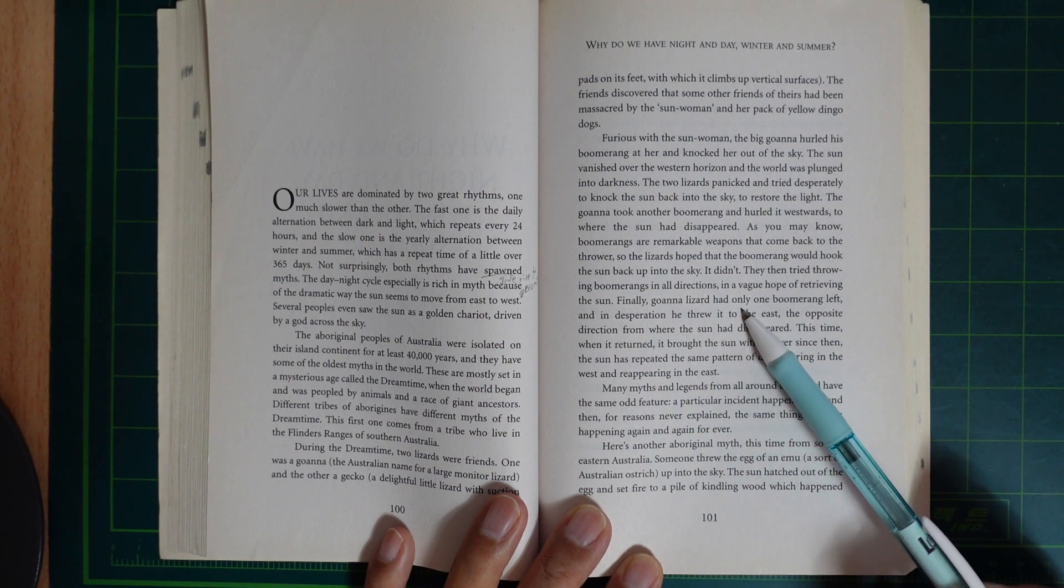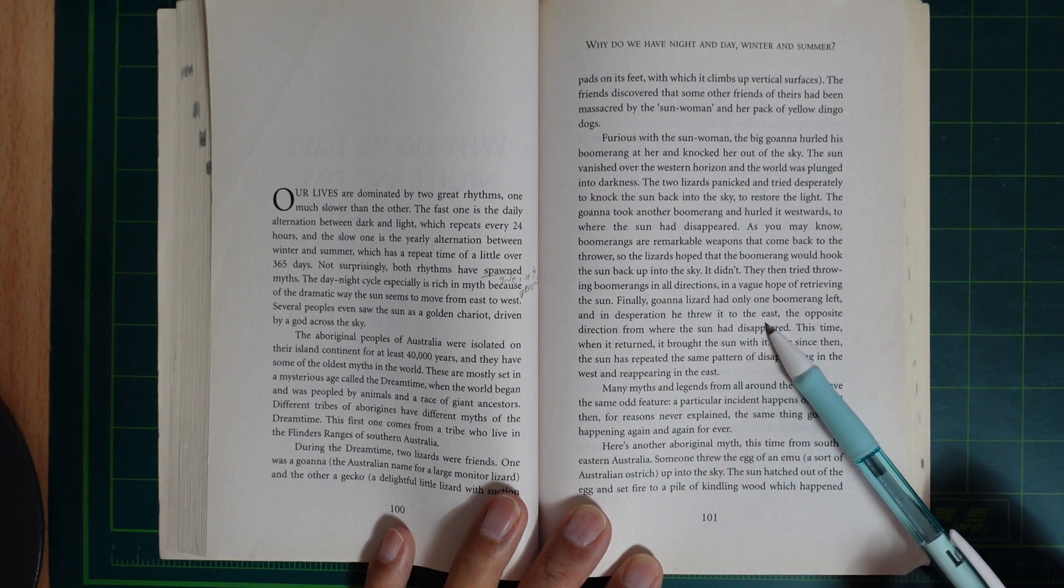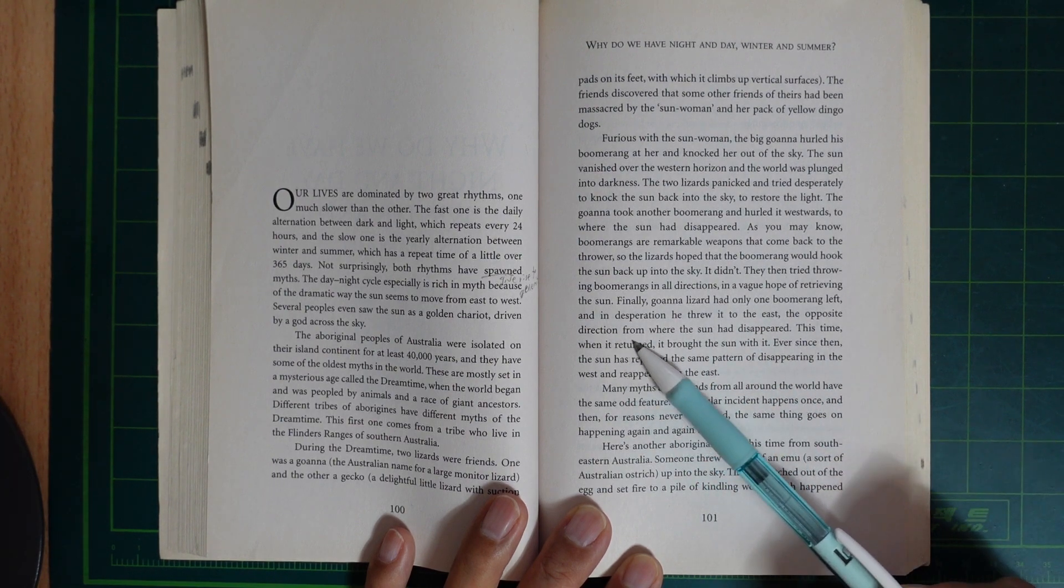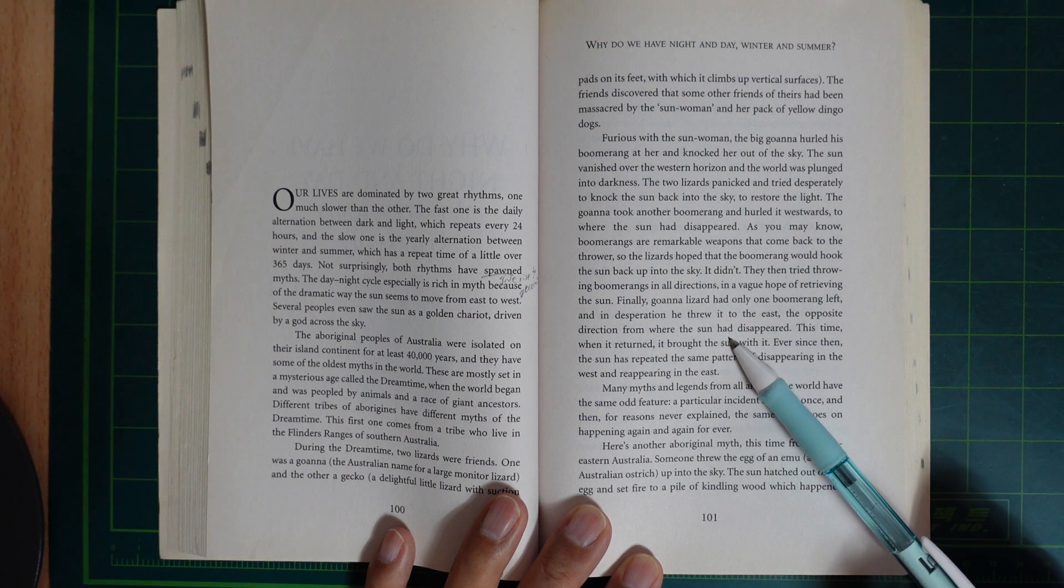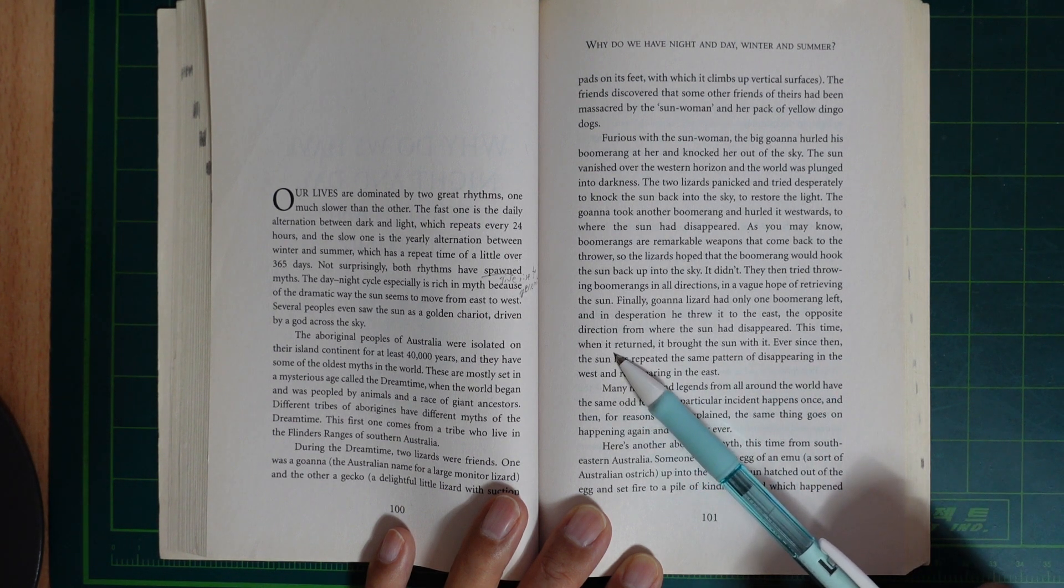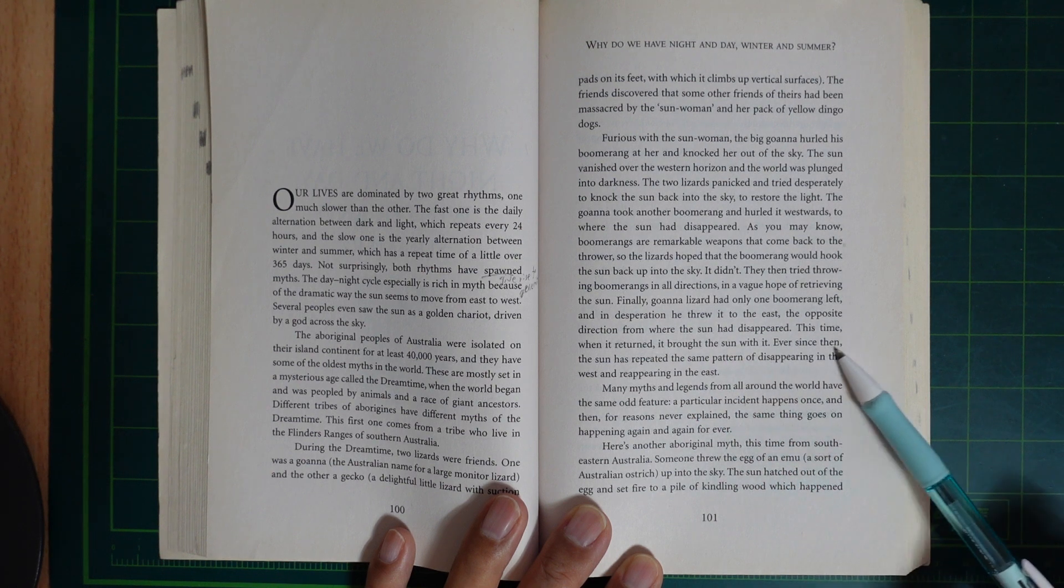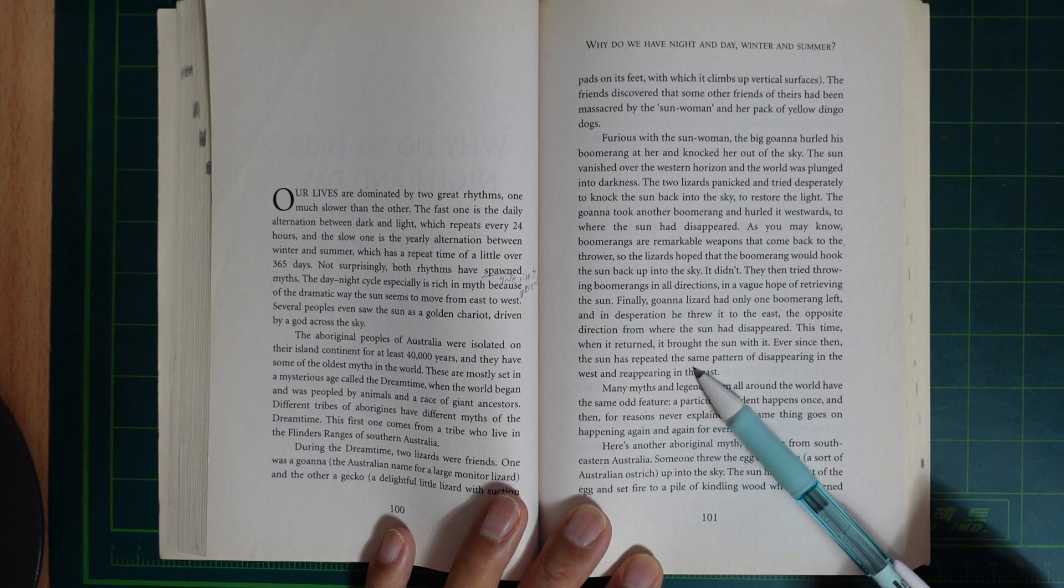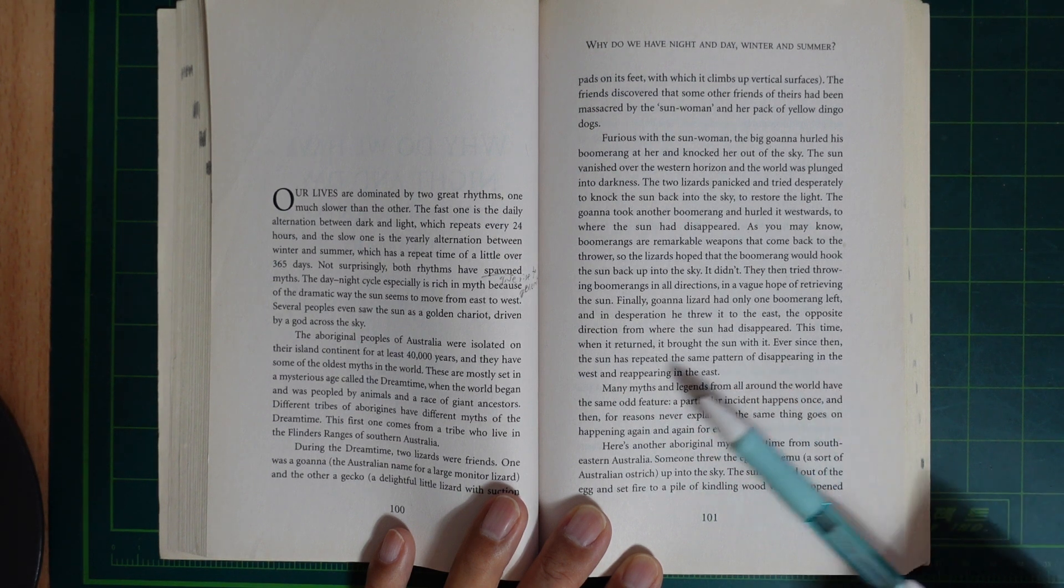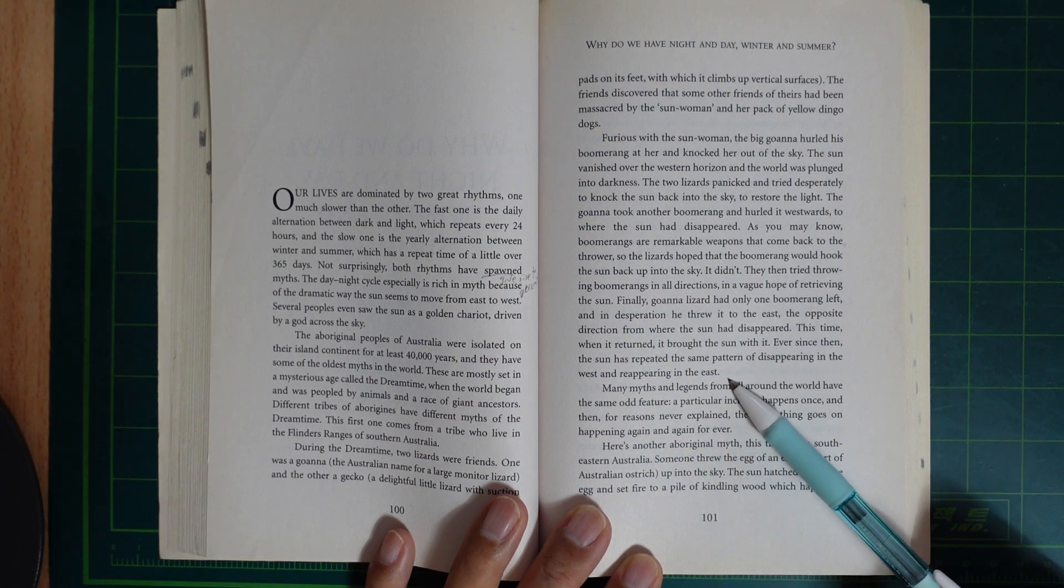Finally, goanna realized he had only one boomerang left and in desperation he threw it to the east, the opposite direction from where the sun had disappeared. This time when it returned, it brought the sun back. Ever since then, the sun has repeated the same pattern of disappearing in the west and reappearing in the east.